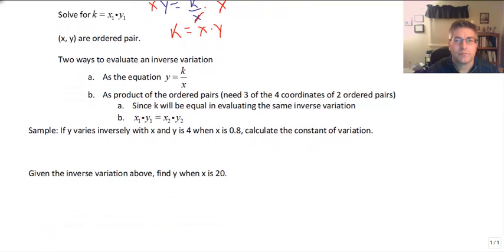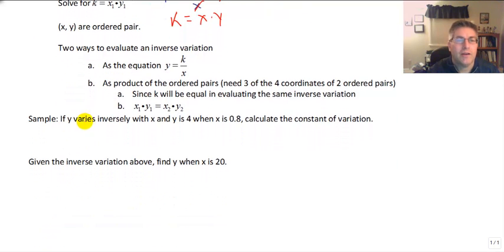For example, if y varies inversely with x and y is 4 when x is 0.8, we want to solve for k, find the constant of variation. Well k equals x times y.